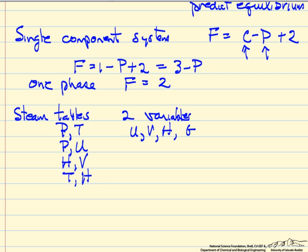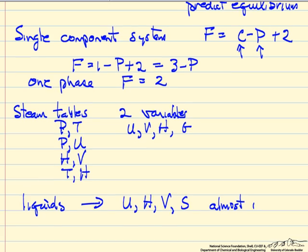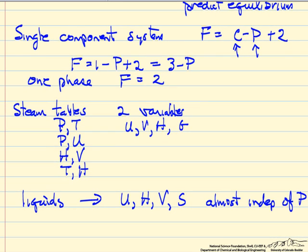So one thing that you'll notice if you look at the steam tables and you look at liquids is that U, H, V, S, none of these change very much when we change the pressure. They're almost independent. You have to go to high pressures to see much of a change. And this is what then, for liquid water, we refer to as incompressible because these are almost independent.